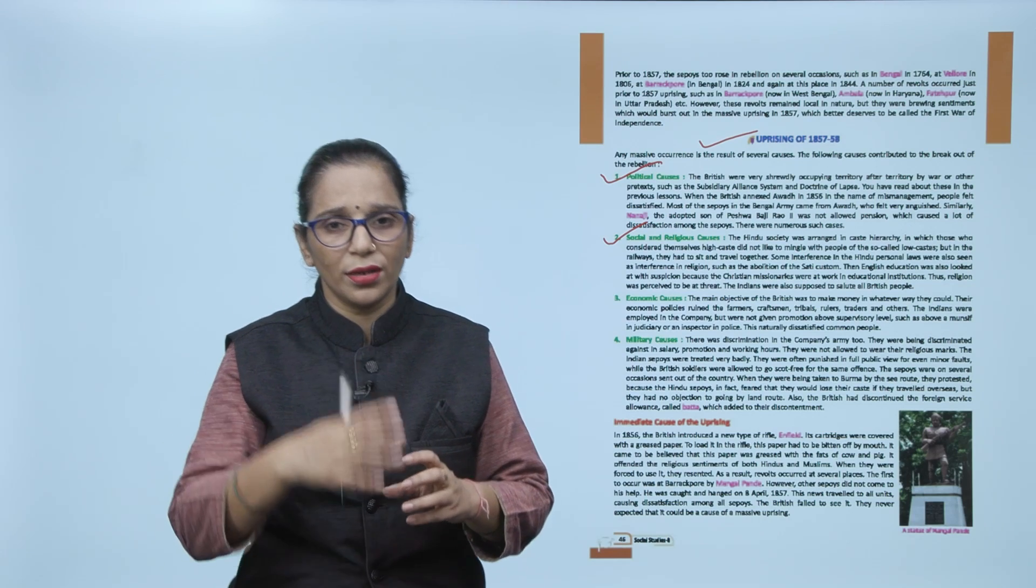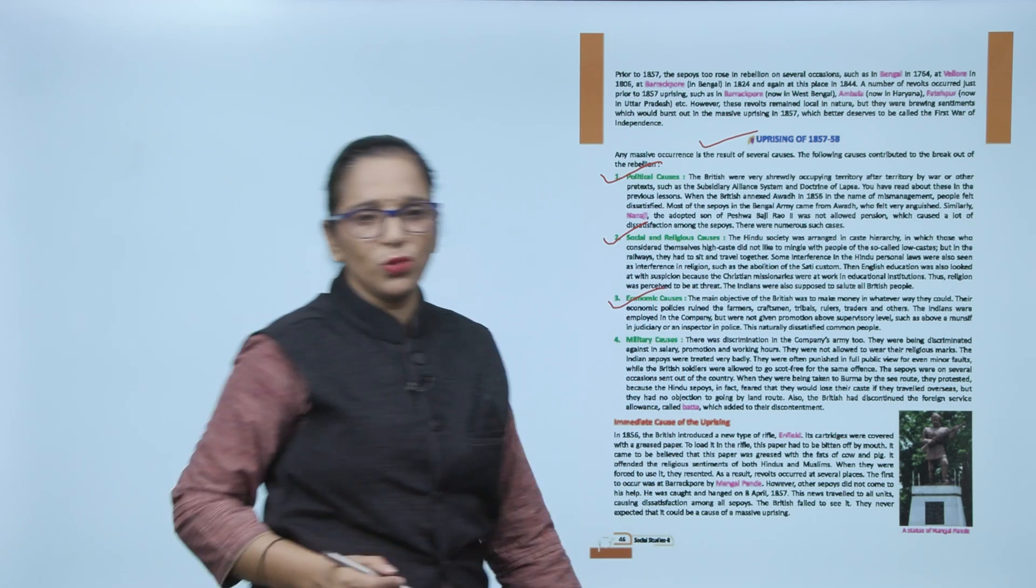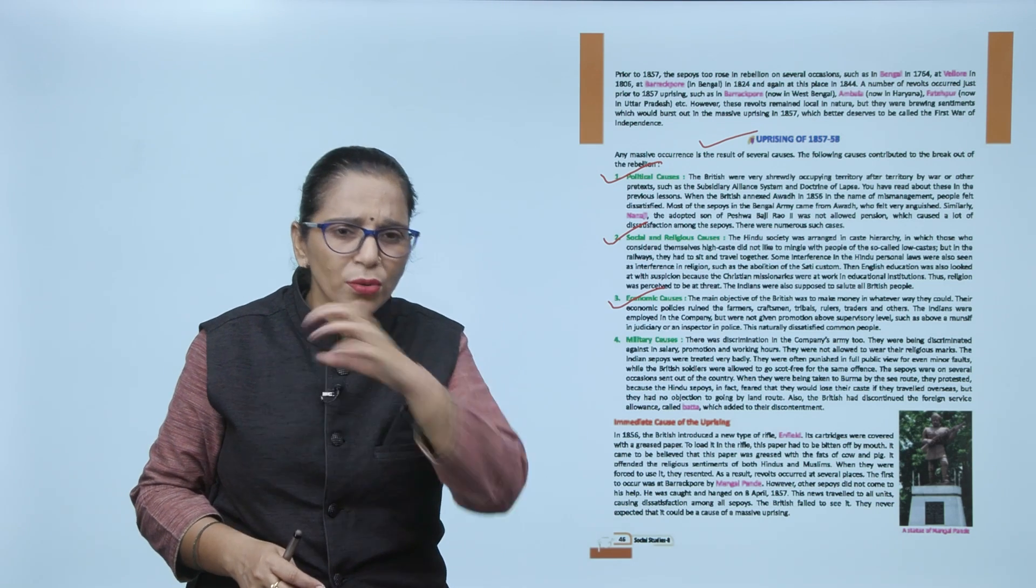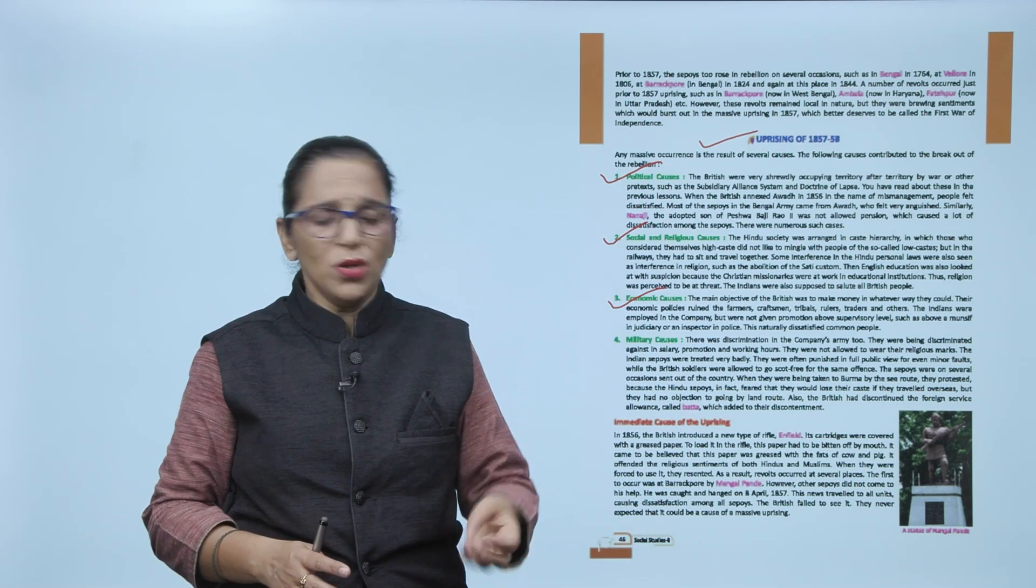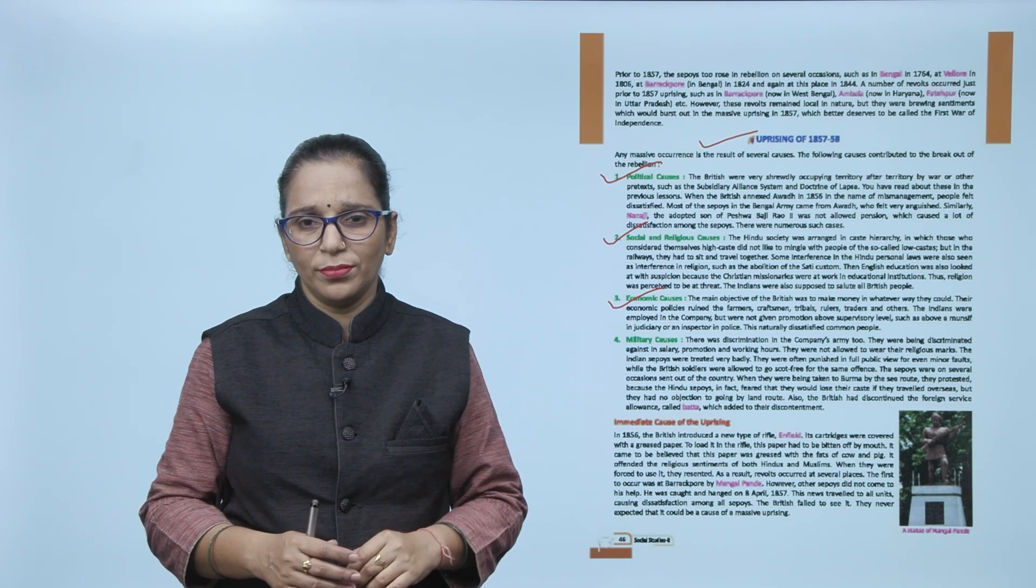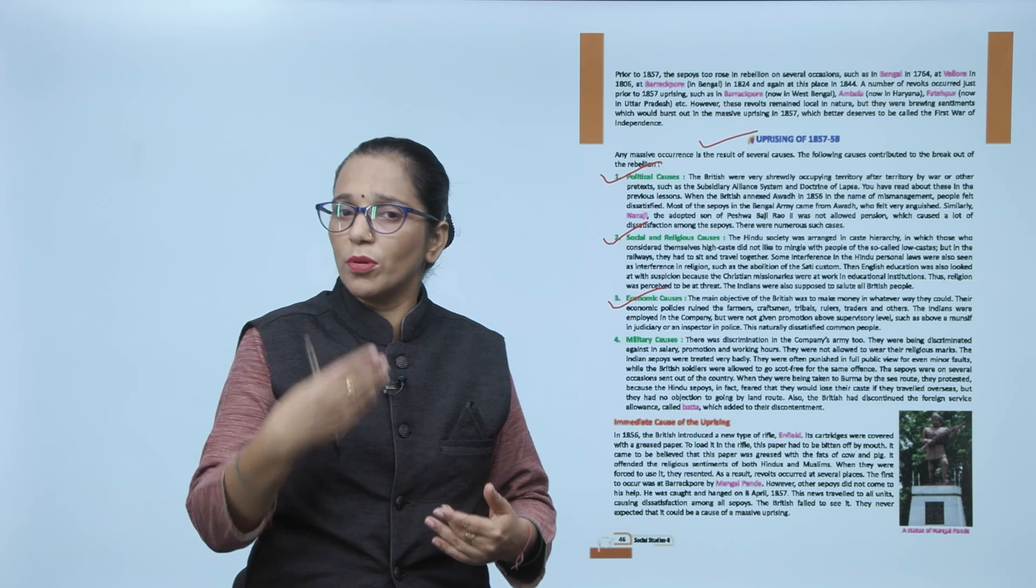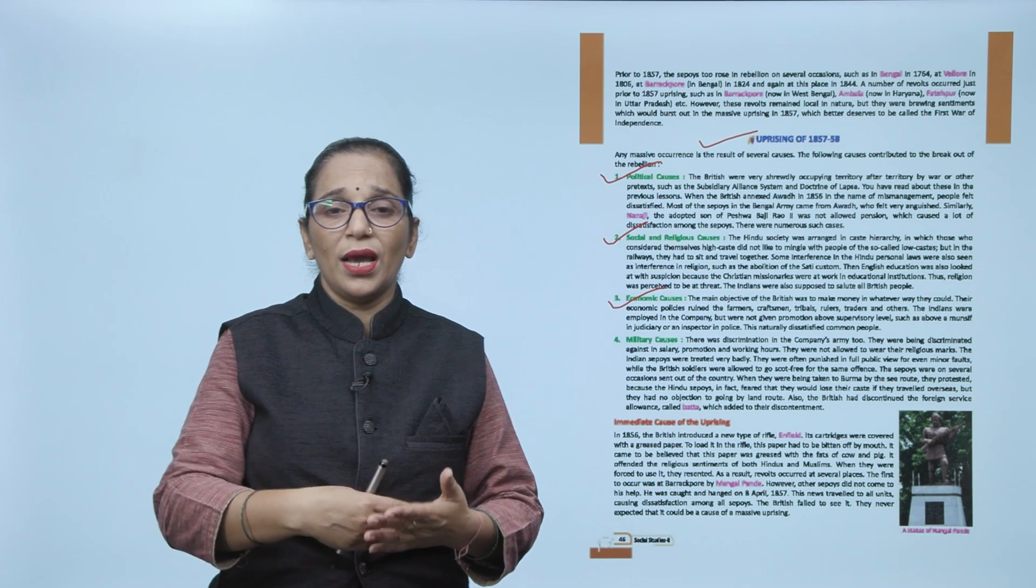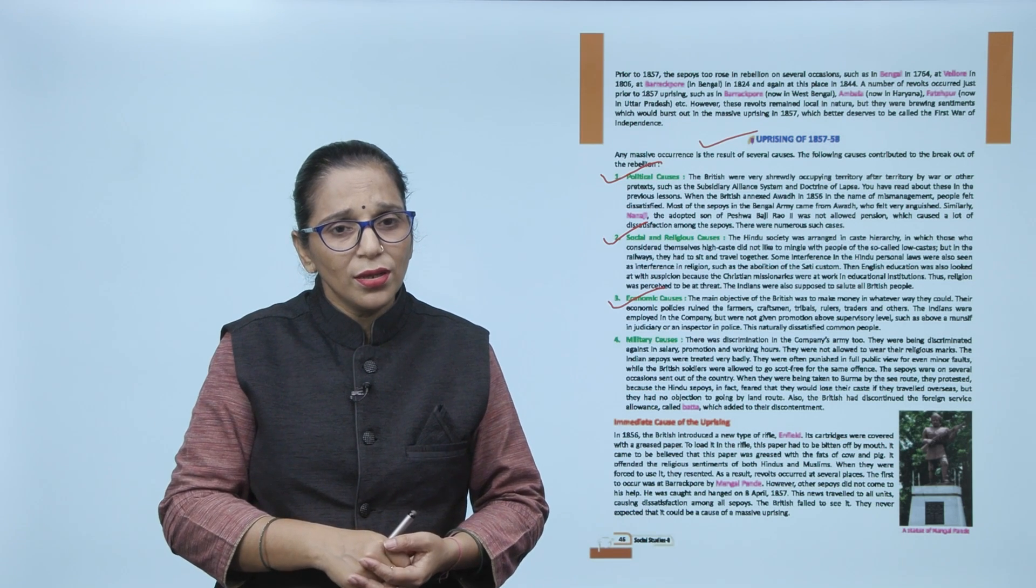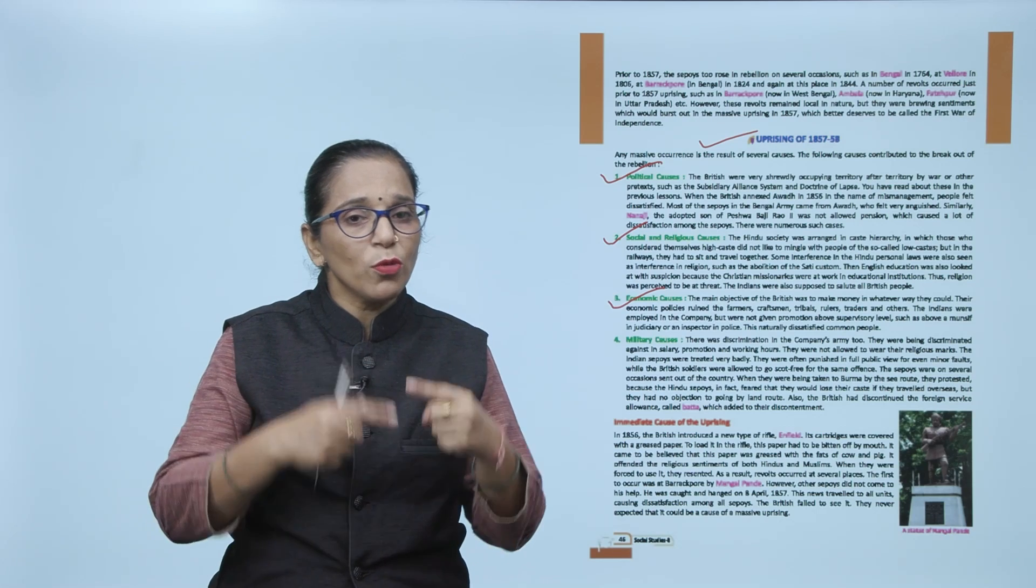Economic causes - the main objective of the British was to make money and money and money. Economic policies ruined everyone - local craftsmen, farmers, tribal communities, rulers, merchants, landlords. Indians who were employed in the company never got promotion, never got good salary scales. There was always a British above them. After studying so much and working so hard, if you have to remain at the same level under them, then somewhere there was also a problem. Dissatisfaction was high among common people.